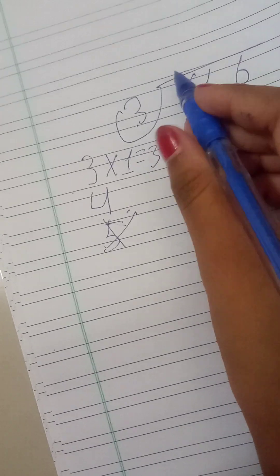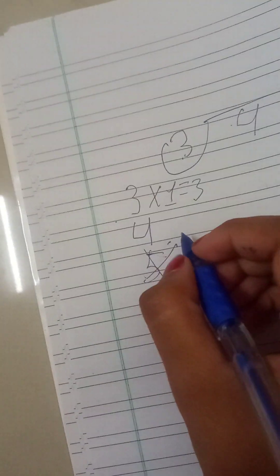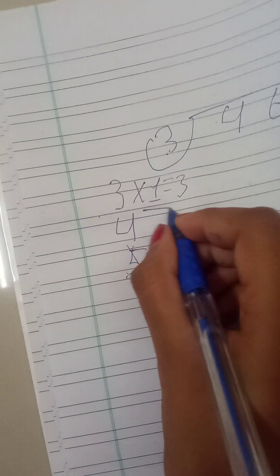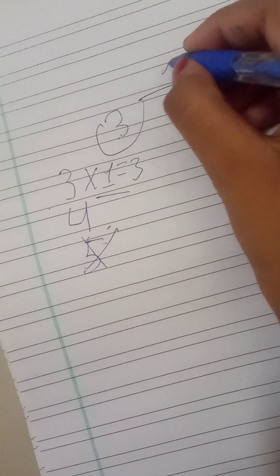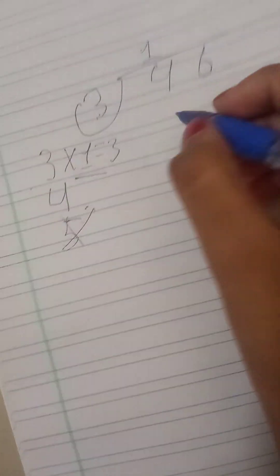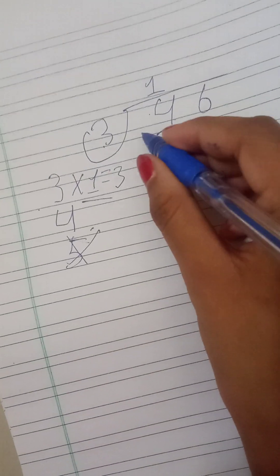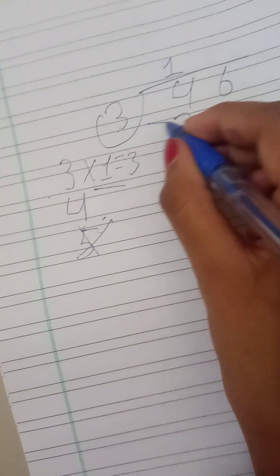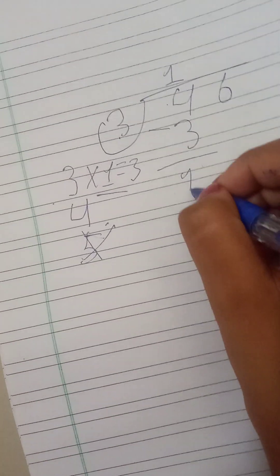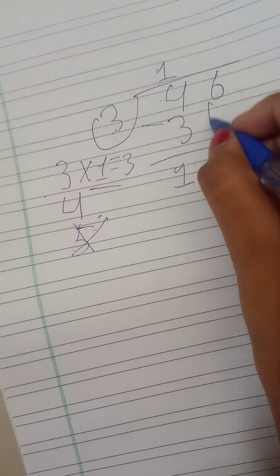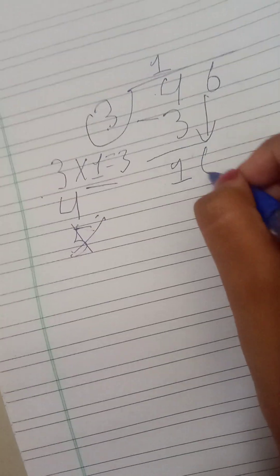But we can't write 3 here. That's incorrect. We have multiplied 1, so we're going to write 1. What's next? Let's write 3 here and minus it by 4 equals 1. Now, we'll bring down 16.